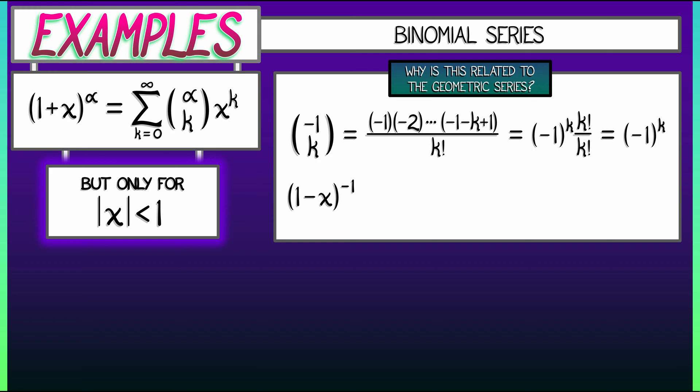and write that as quantity 1 minus x to the negative 1 power, then the binomial series says that this is the sum k goes from 0 to infinity of negative 1 choose k times minus x to the k. Be careful with that sign. This simplifies to sum k goes from 0 to infinity. What do I got? I got a negative 1 to the k from the binomial coefficient, and then a negative 1 to the k from that thing in the parentheses. That's negative 1 to the 2k times x to the k.